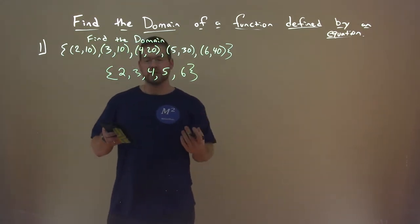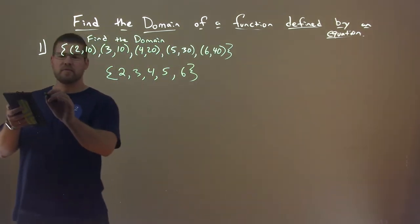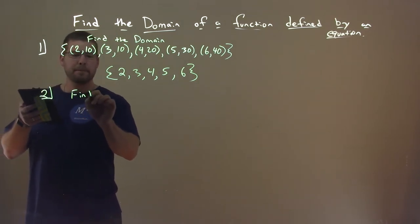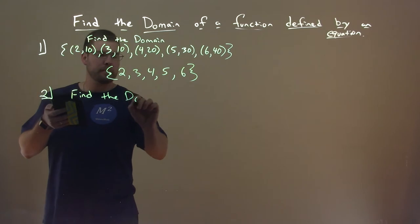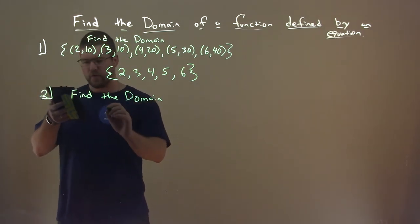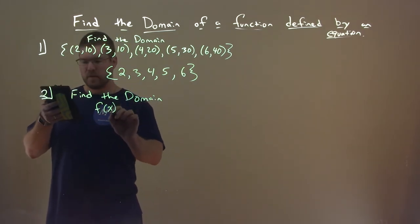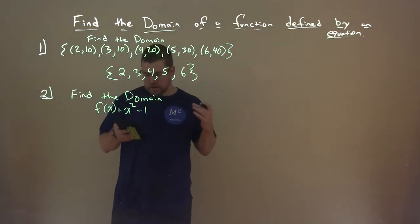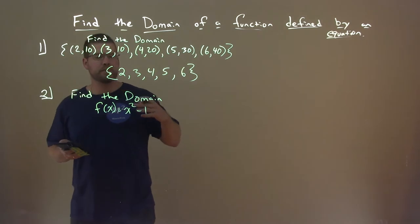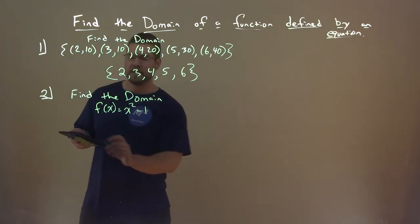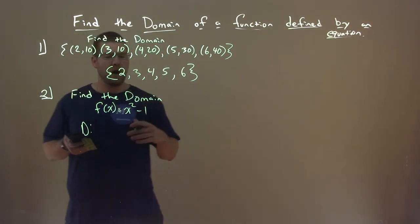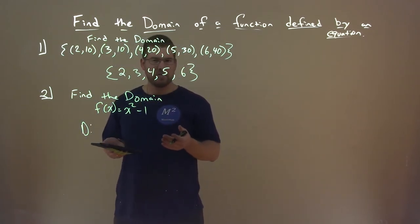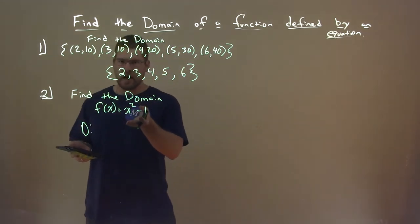Let's say we're given this function, number 2: F of X equals X squared minus 1. We want to find the domain. What values are we allowed to plug in for X?